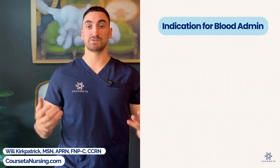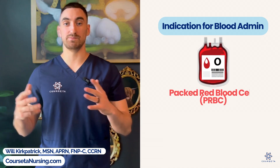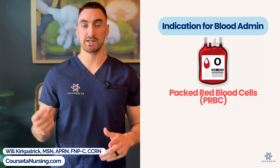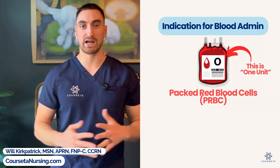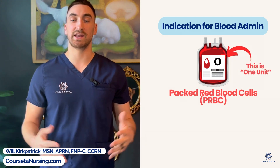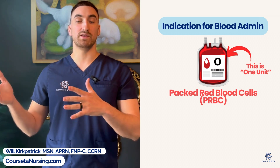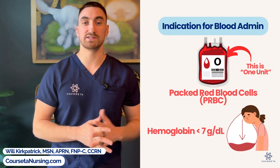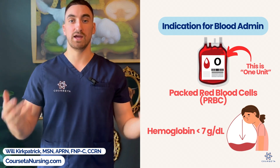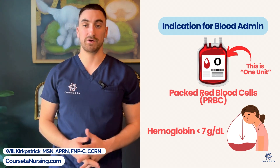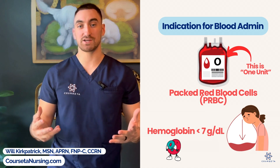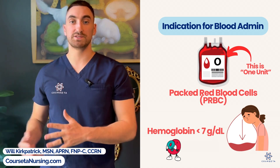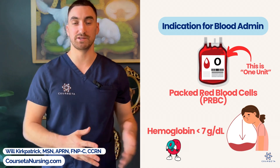In this video, when we talk about blood transfusion, we're talking about packed red blood cells, or PRBC. Packed red blood cells are dosed by units — one unit is one bag of PRBCs — and it's usually indicated in a hospital setting with a hemoglobin level below 7. A hemoglobin level below 7 is considered an indication for a PRBC. Hemoglobin is the protein that carries oxygen on our red blood cell.